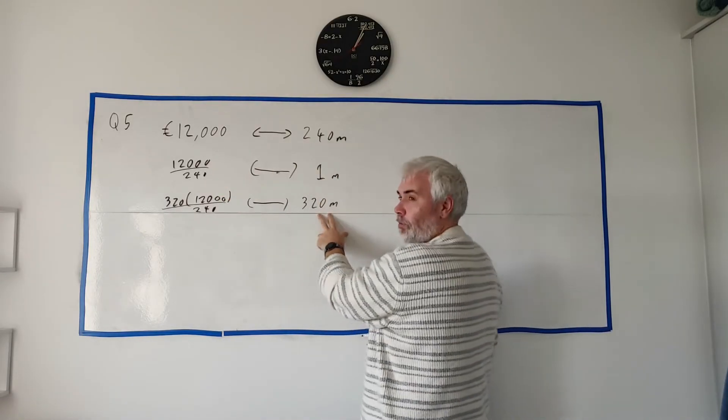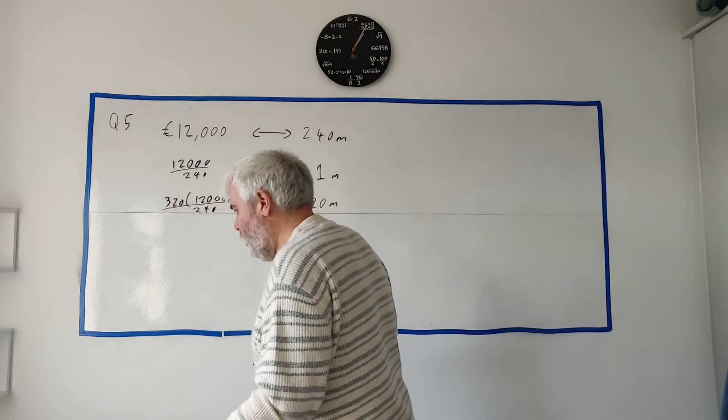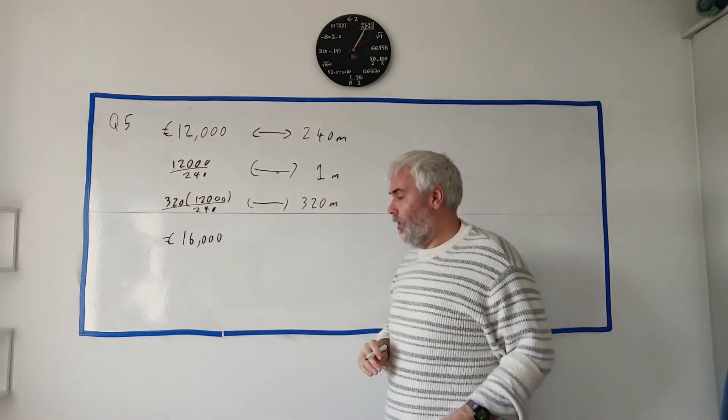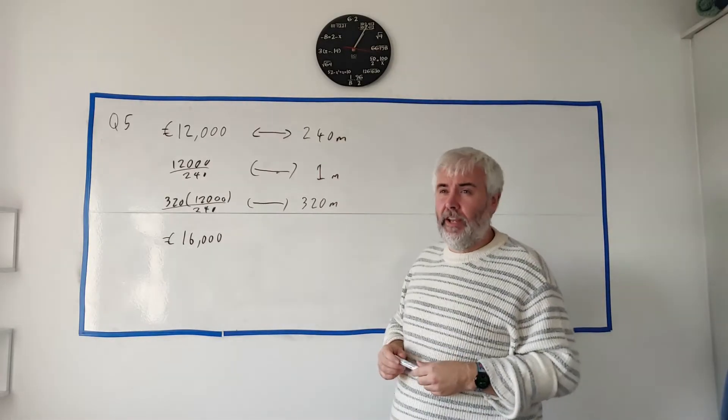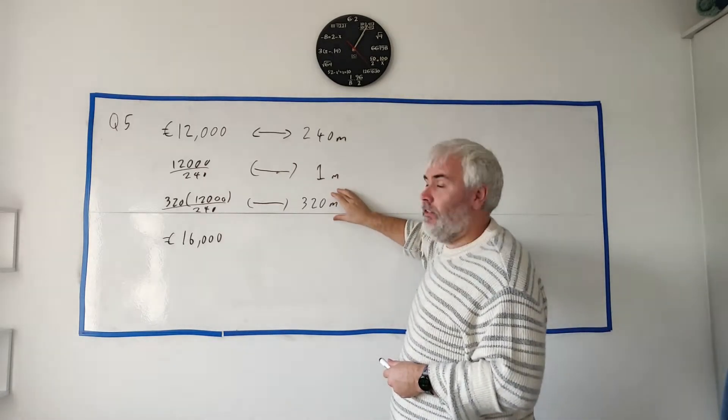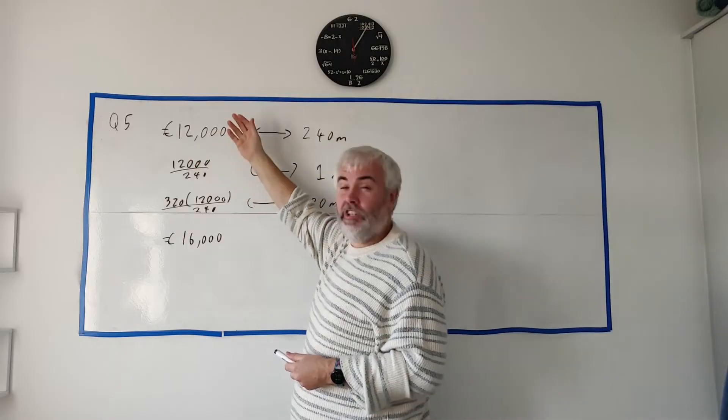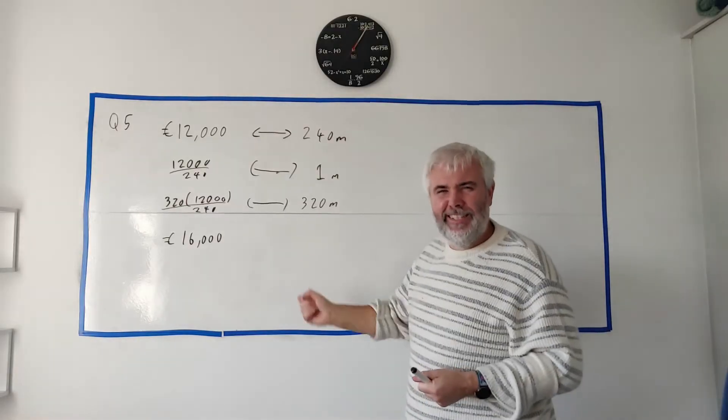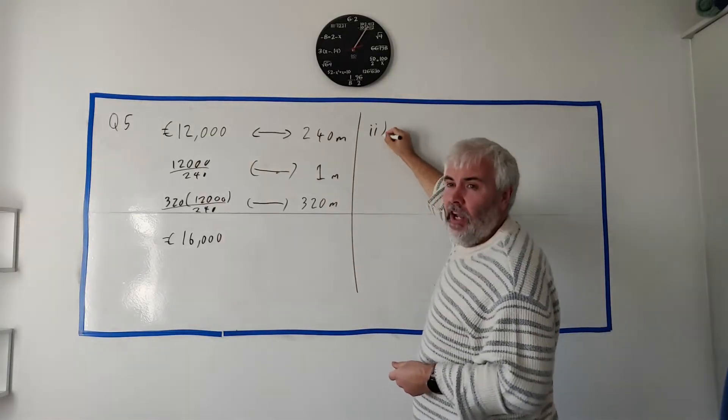A lot of people would just tell you divide by 240 multiply by 320. I'd like to show you exactly where that's coming from. Put this sum in a calculator and you should get 16,000 euros to go 320 meters. Just to say there are other ways to do this question. Some students might notice that 240 is 80 away from 320, and 80 is one third of this number. One third of 12,000 is 4,000, so it should just cost 4,000 more. If you can do it in your head, brilliant, just tell the examiner what you're doing.